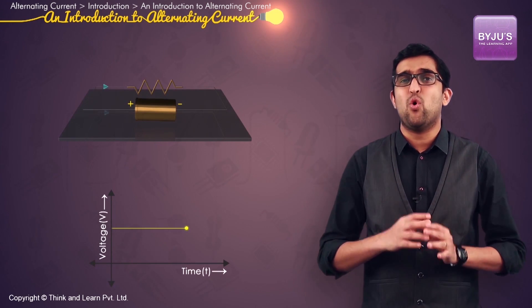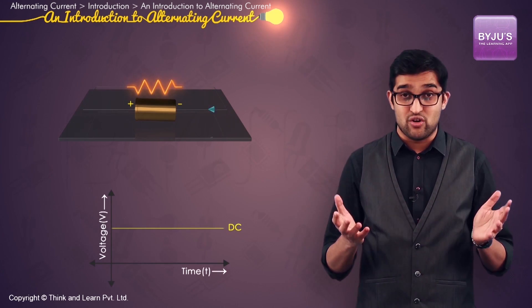But direct current is not the only type of current we can come across. There are sources of electricity which produce voltages and currents that are alternating in nature, that is they could cyclically change directions.